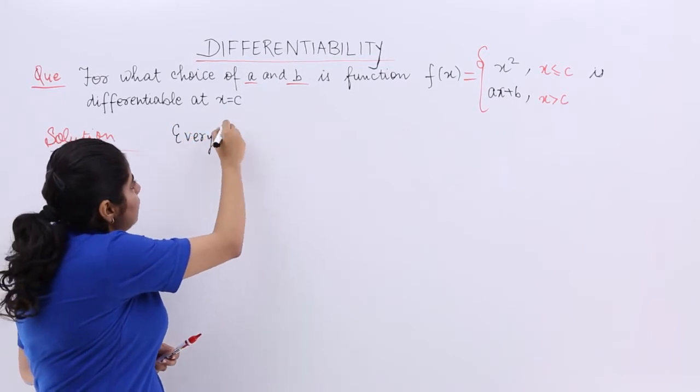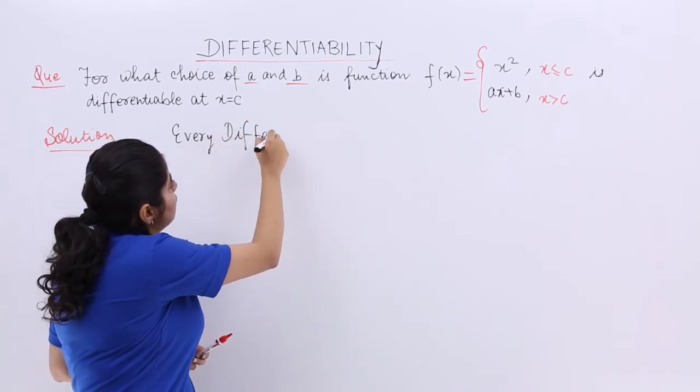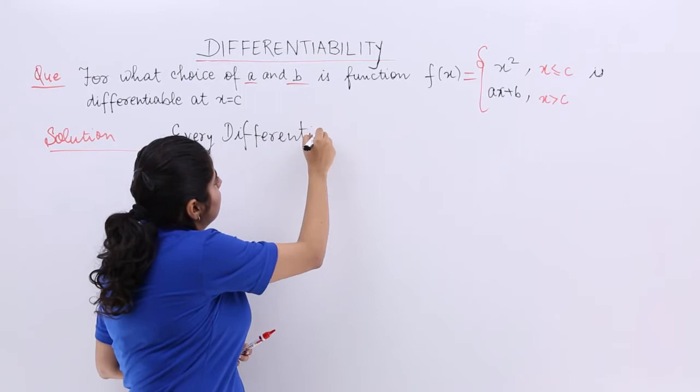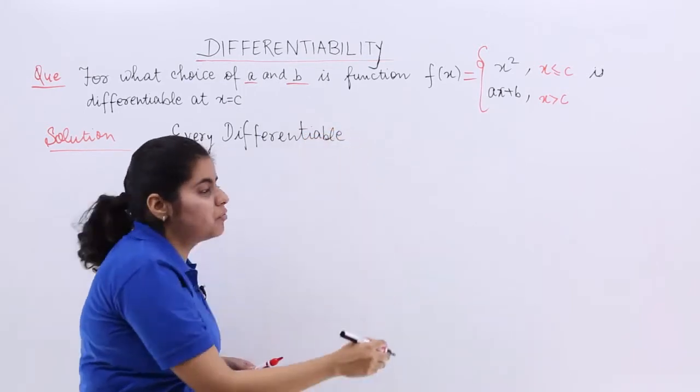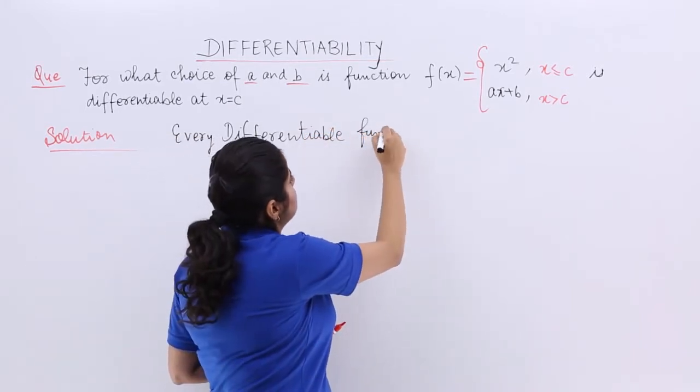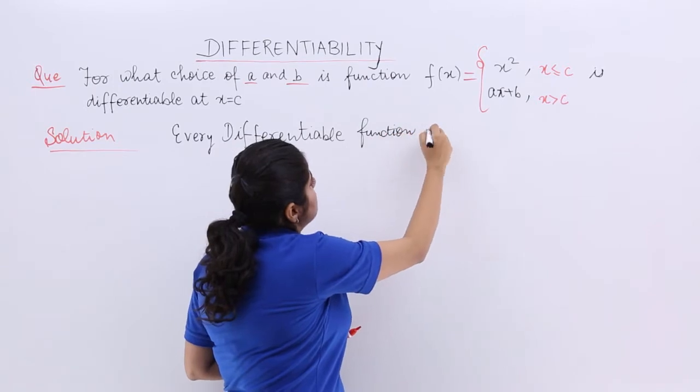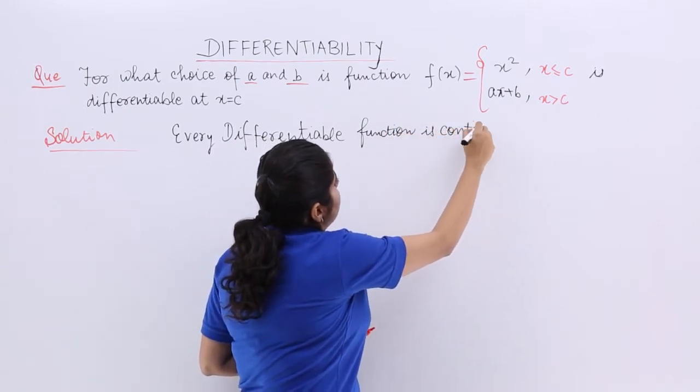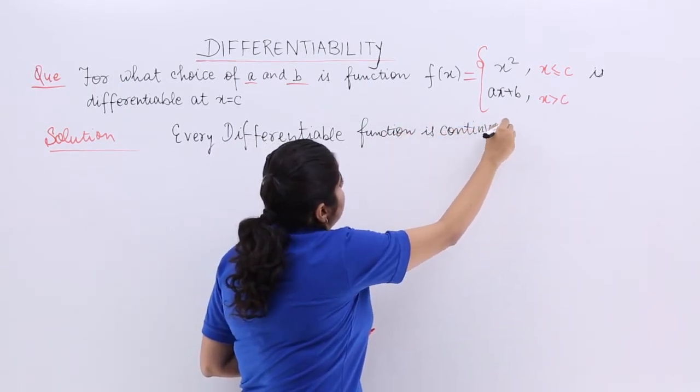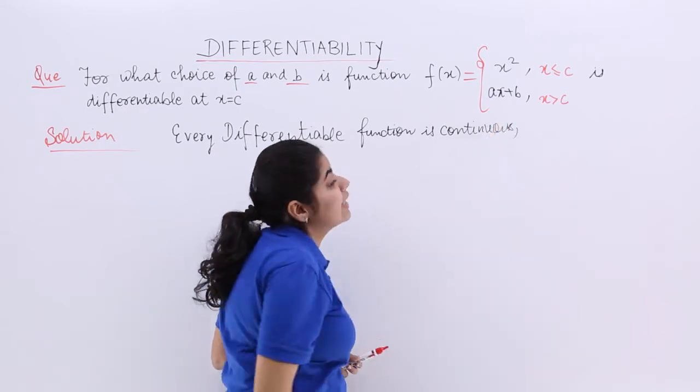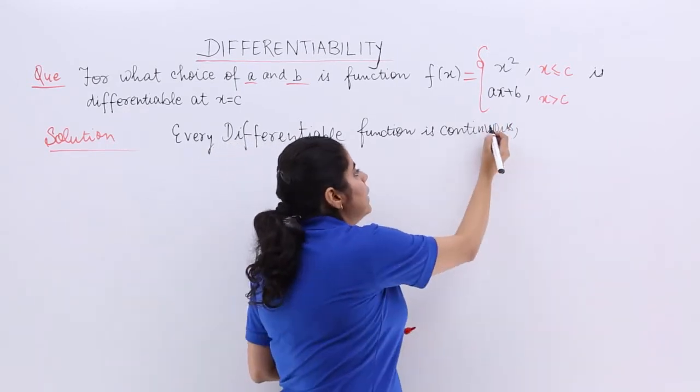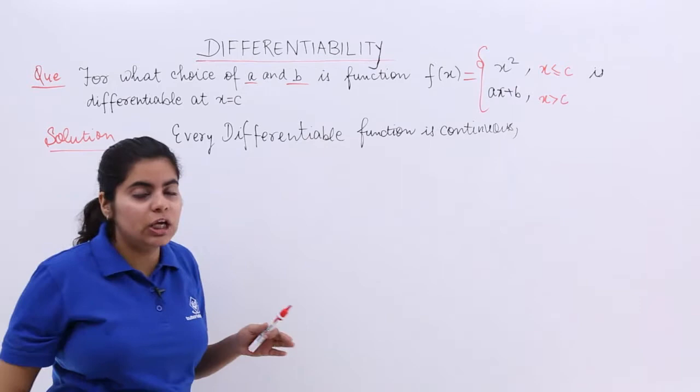Let us write down every differentiable function is continuous. And we know this. So now, we will be doing something related to continuity also. Only then we can find out the other equation.